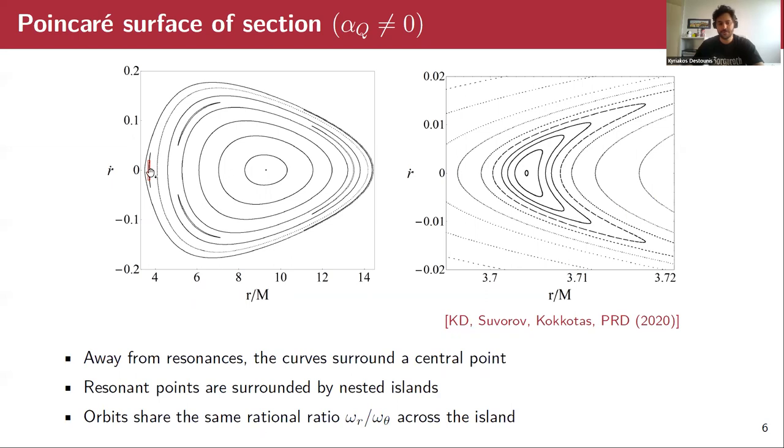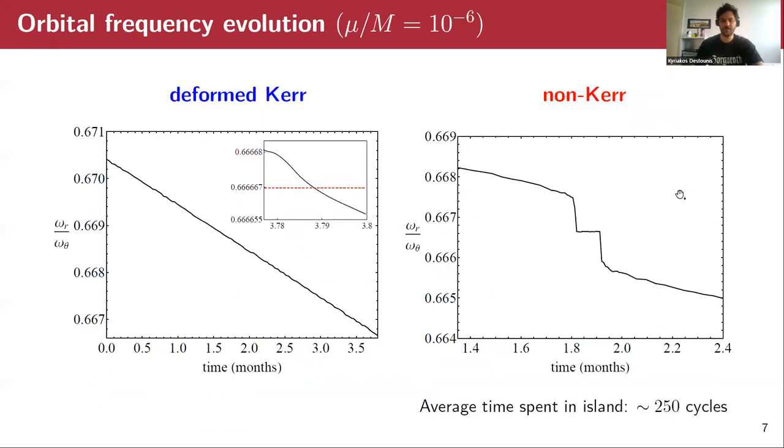If we zoom in on this one here, this island, we see the different nested-like structure where these curves surround the central stable periodic point and not the central fixed point of the Poincaré map. Therefore, as we have seen away from resonances, the curves surround the central point and nothing interesting happens, but close to resonant points like this one, we have the formation of nested islands or Birkhoff islands. The interesting part about this is that the orbits inside the islands have the same rational ratio. This means that even though we do not have a full-blown chaotic phenomenon here of a purely chaotic orbit, we have an imprint of chaos which is indirect but much more visible than pure chaos.